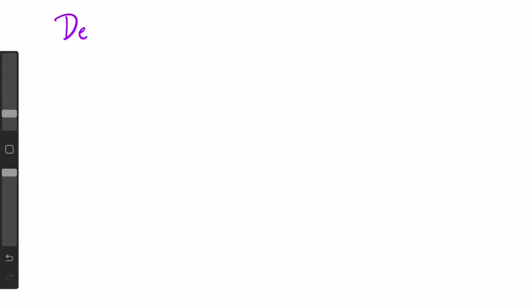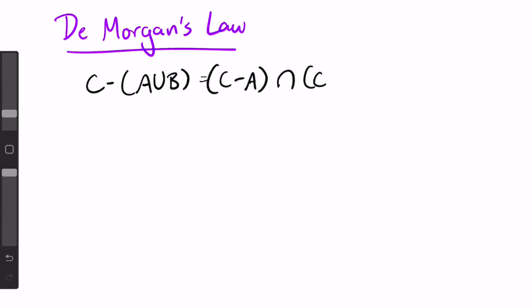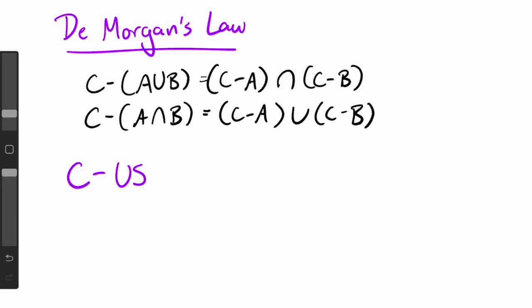The other law we want to generalize is De Morgan's Law. To recap from part one, De Morgan's law states that C minus (A union B) equals (C minus A) intersect (C minus B) and C minus (A intersect B) equals (C minus A) union (C minus B).